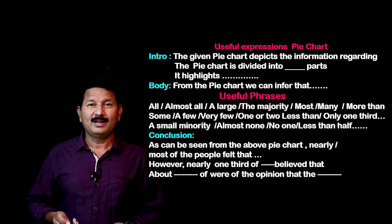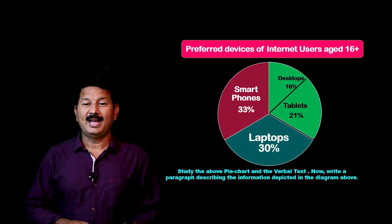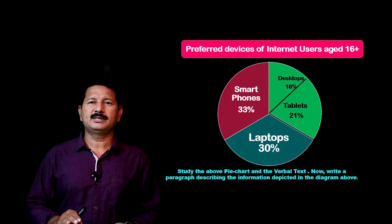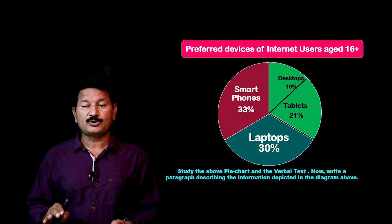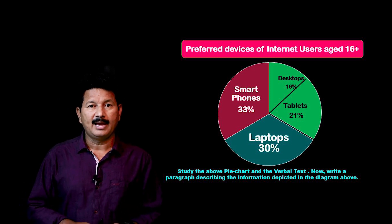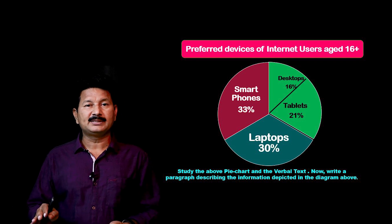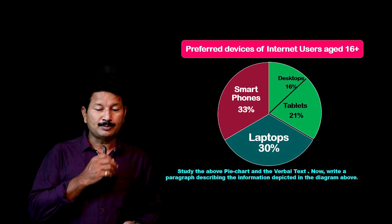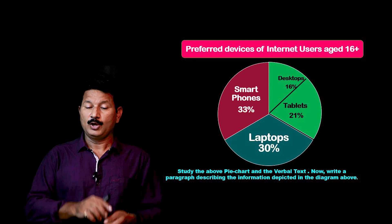Now let's look at the pie chart. Based on these instructions, I asked my student Gnansai to do this work. Let's look at how nicely he has transformed the data. This is from actual 10th class students. The topic is preferred devices of internet users aged 16 and above. The data shows: smartphones 33%, laptops 30%, desktops 16%, and tablets 21%.